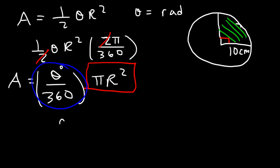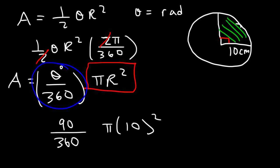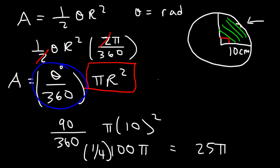In our example the angle is 90° and the radius is 10, so πr² = 100π. Since 90/360 = 1/4, the area of the sector is one-fourth of 100π, which is 25π. So θ/360 is simply the fraction of the circle that the sector represents, multiplied by the total area of the circle.